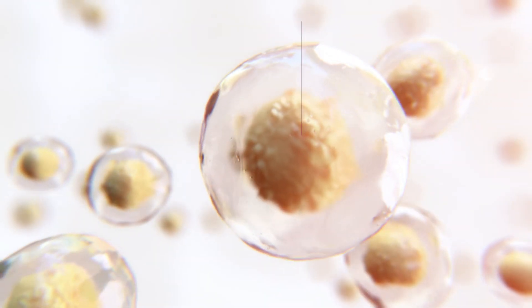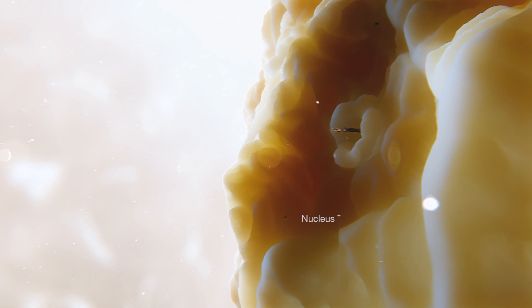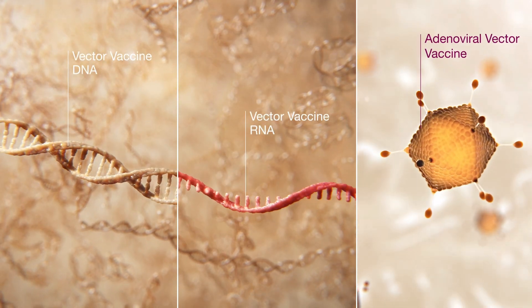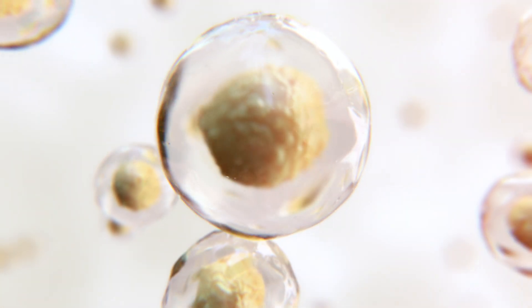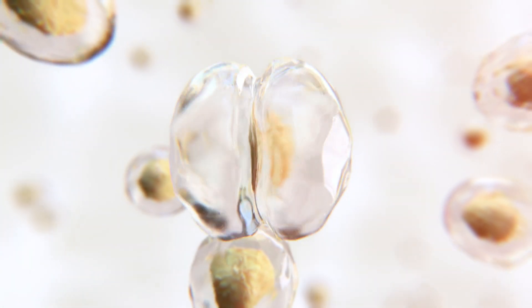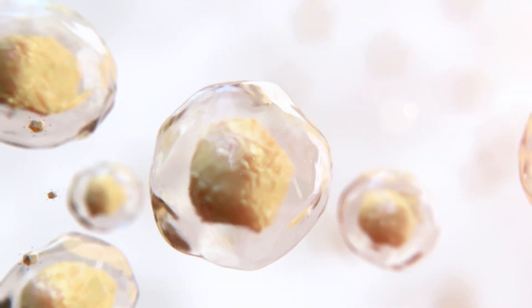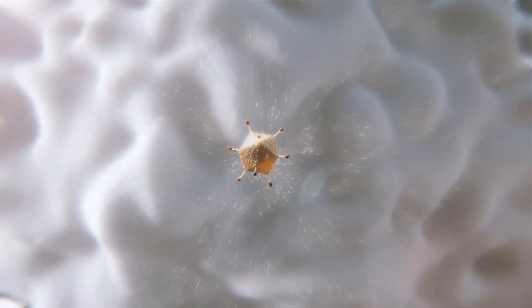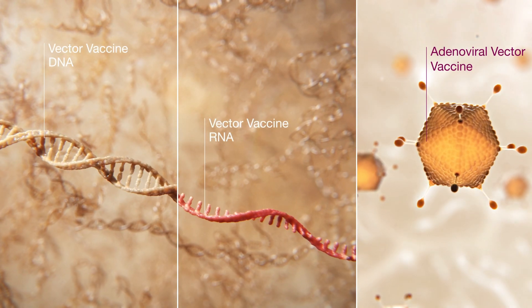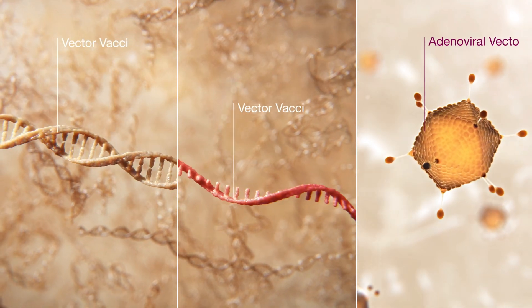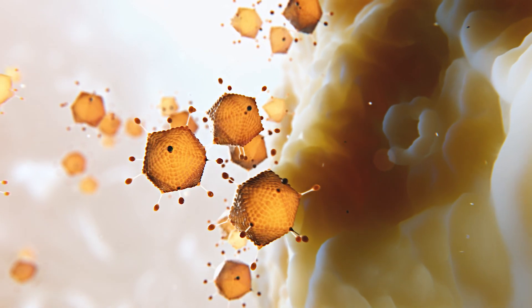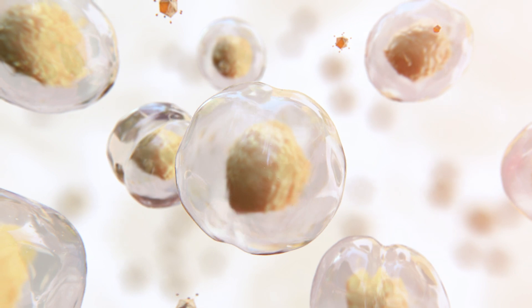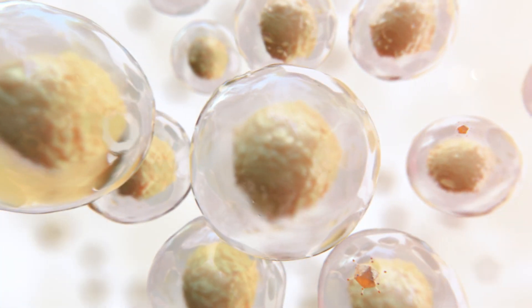The genetic code is introduced into a producer cell where it is transcribed and translated to form the COVID-19 adenoviral vector vaccine. The human cell line is engineered to contain the missing adenovirus genes, so that when the vector vaccine is introduced it can infect the cells and use the cell machinery and missing viral genes to replicate, producing identical copies. Vaccine molecules are also replicated with the division of the cells, and the process continues until the right concentration is reached.